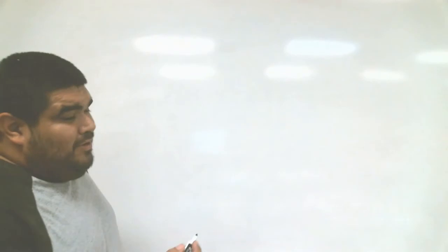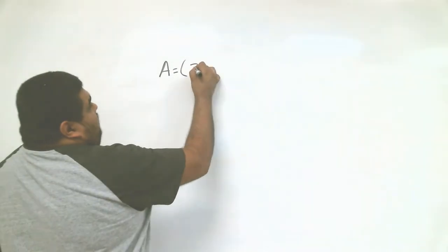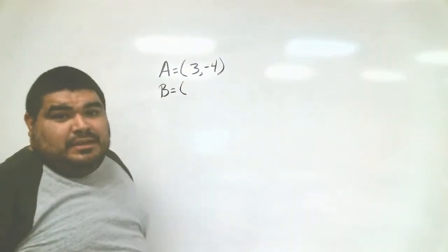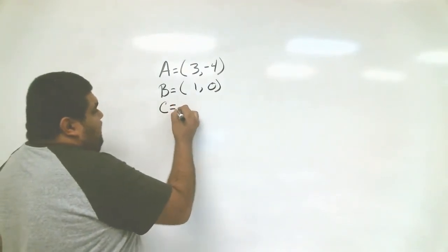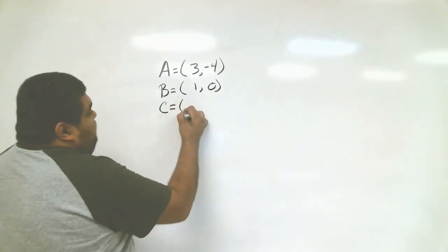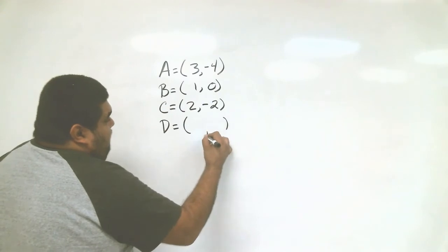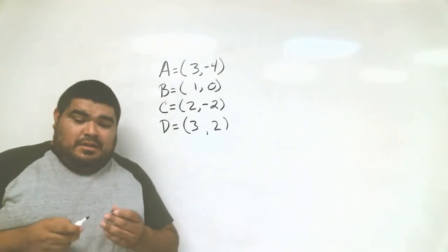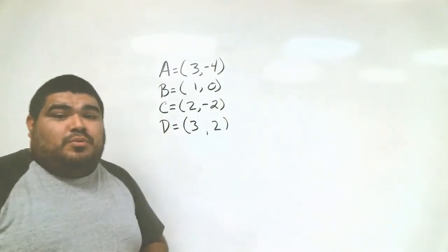Alright guys, your first problem: point A is located at 3 and negative 4, point B is at 1 and 0, point C is at 2 and negative 2, and point D is at 3 and 2, and 2 and 2. Make sure you label them, graph them, and then tell me if it's a function.